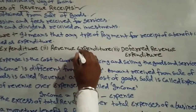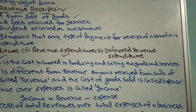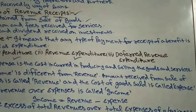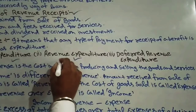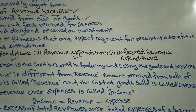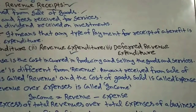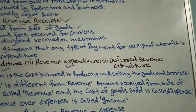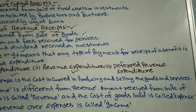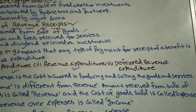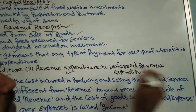Now we talk about revenue expenditures. Revenue expenditures are those expenditures that are involved in day-to-day expenses. Day-to-day expenses means the expenses incurred on the basis of generating revenue — for example, expenses for selling goods in sales. Those day-to-day expenses are called revenue expenditures, i.e., expenditures made to generate revenue.